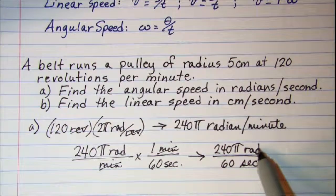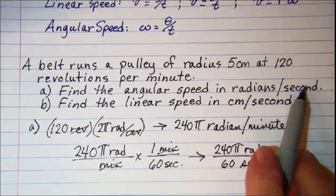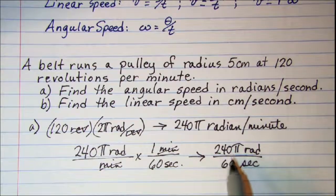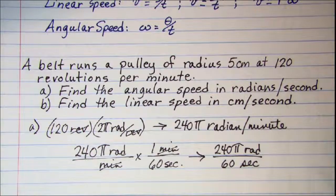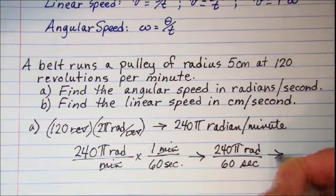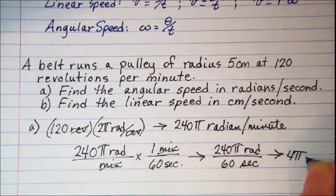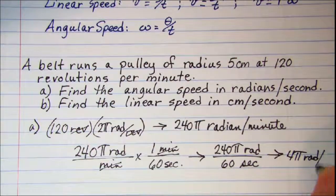Now this is radians per second which is what I'm asked for, but I do need to simplify this. So 240π divided by 60 gives us 4π radians per second.